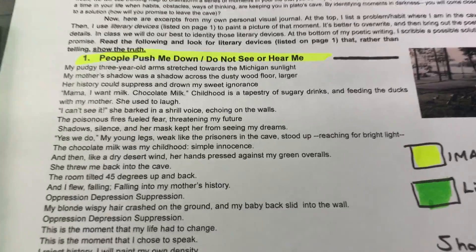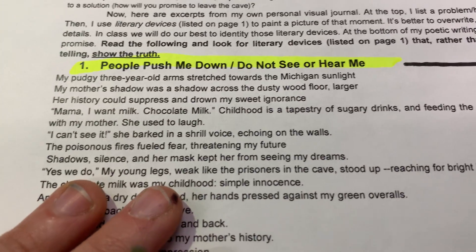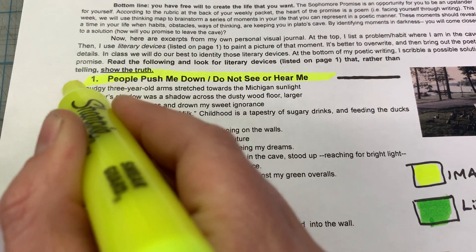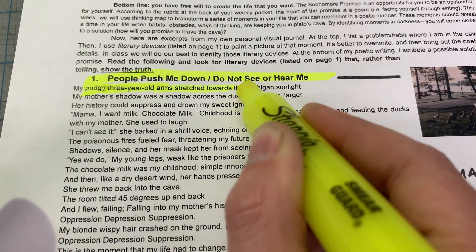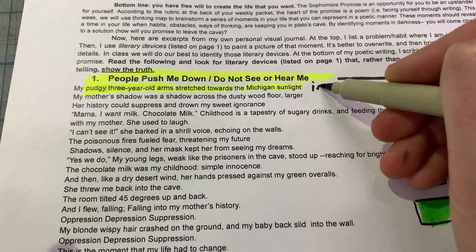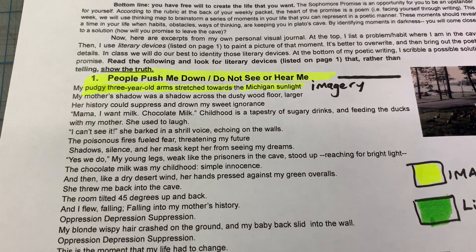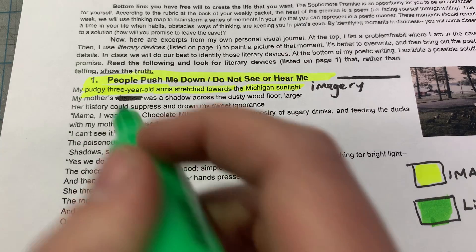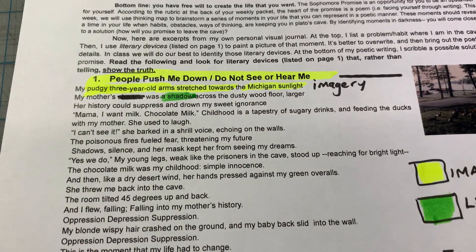Let's annotate for literary devices. The text is small but I wanted to get a lot in a short space. 'My three-year-old arms stretch towards the Michigan sunlight' — this is visual imagery. 'Pudgy three-year-old arms stretch towards the sunlight' — you're painting a picture. 'My mother's shadow cast across the dusty wood floor' — shadow is an image, but it's also an allusion to the cave.